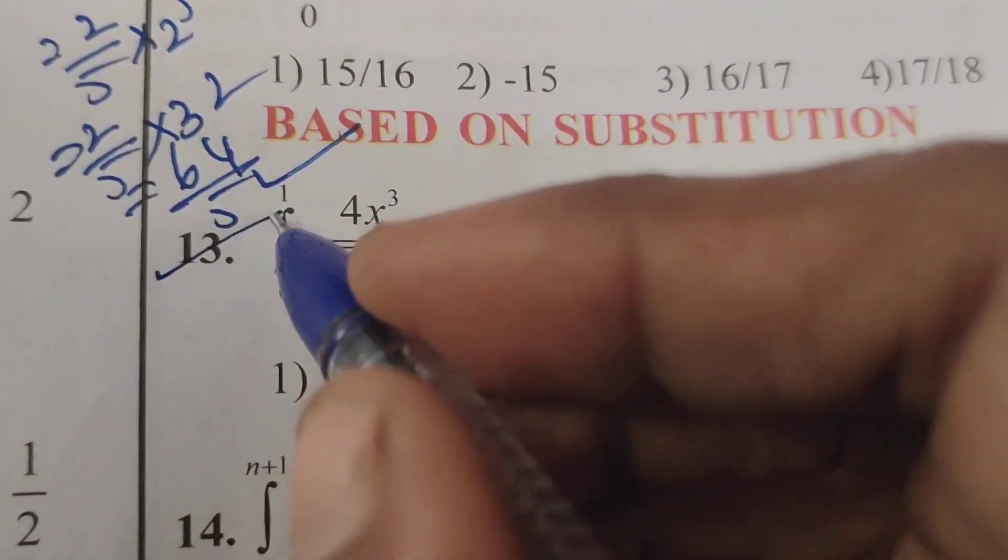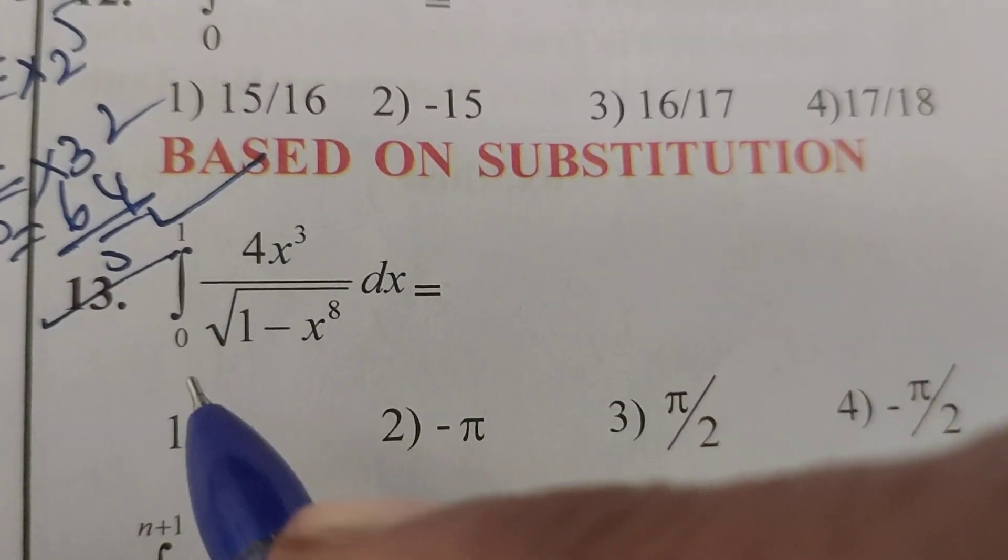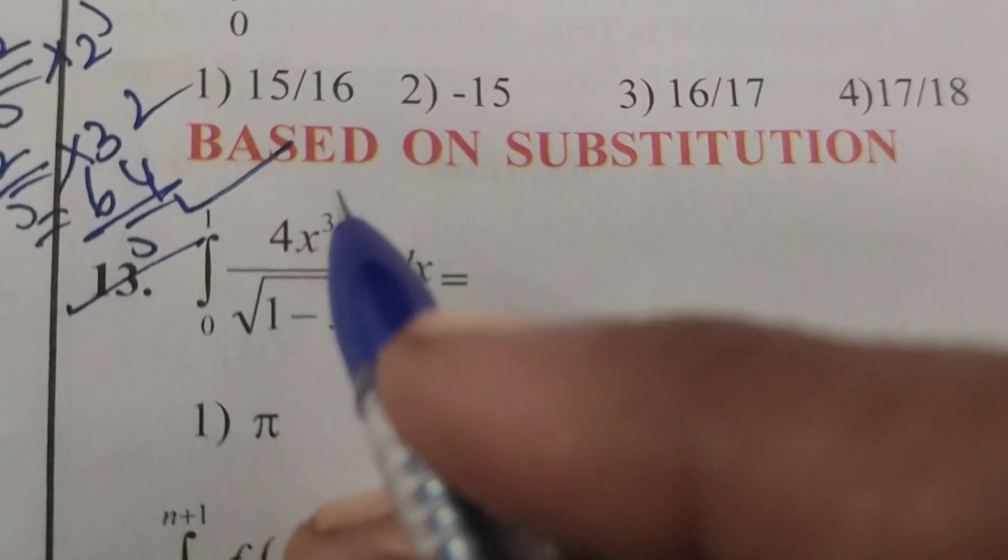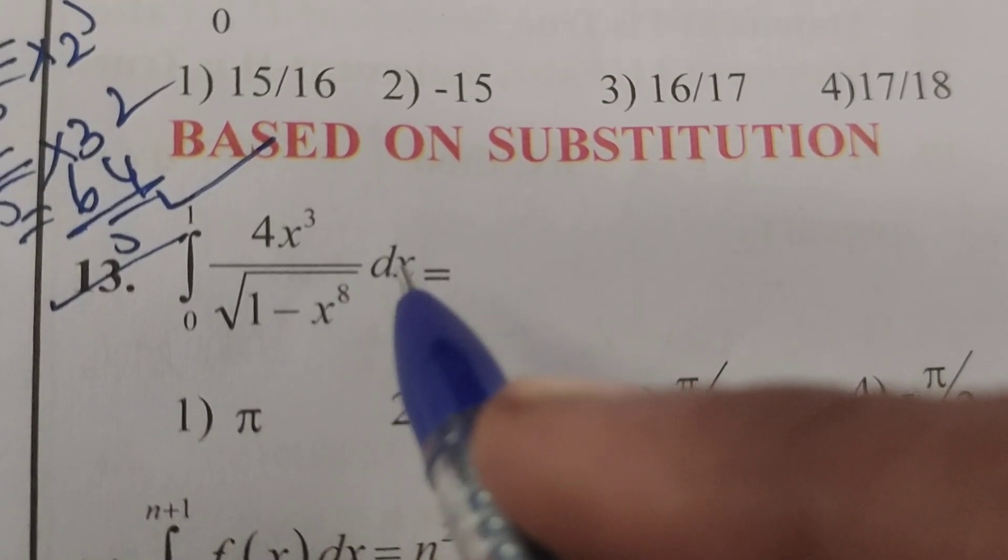This is Dr. Riti. Now today we are going to explain this definite integral problem: integral 0 to 1, 4x³ by root of 1 minus x⁸ dx.